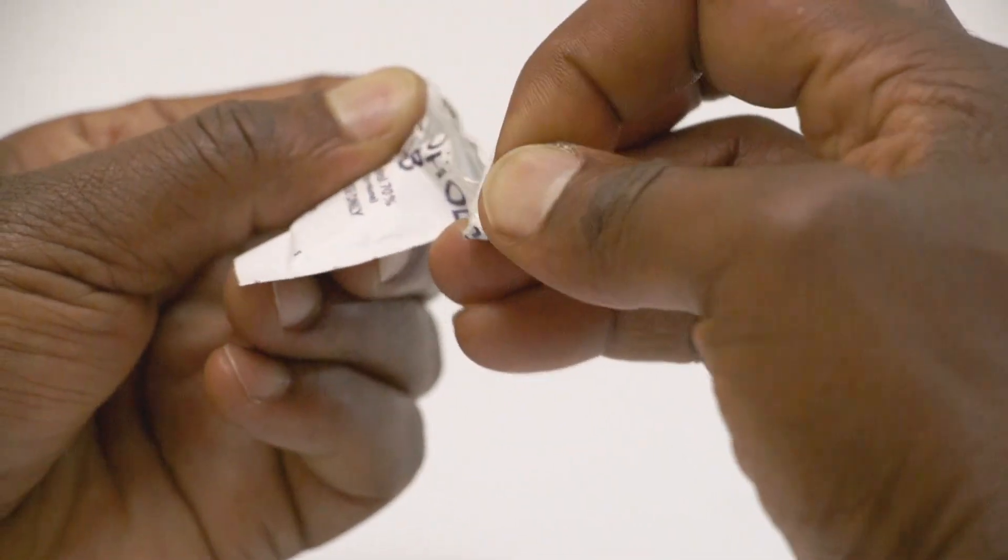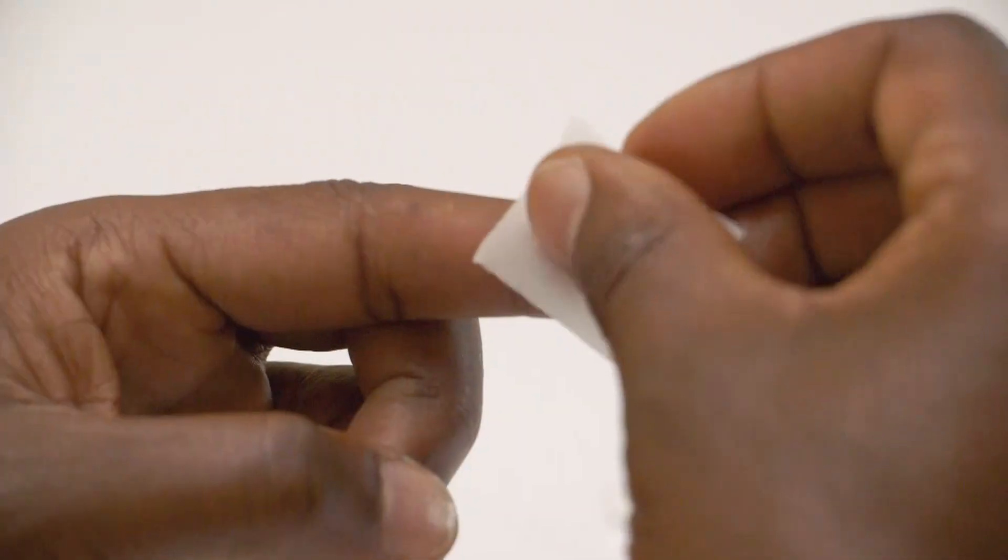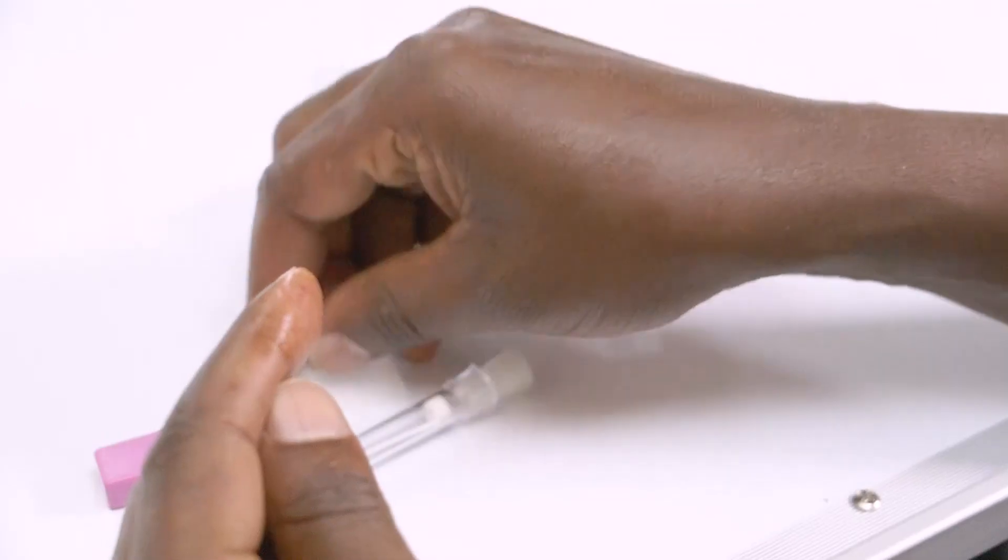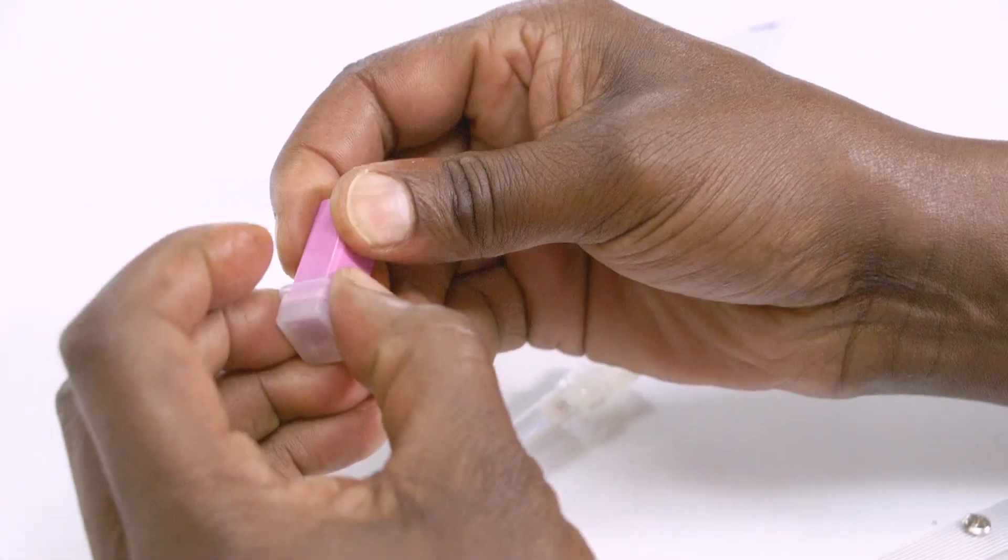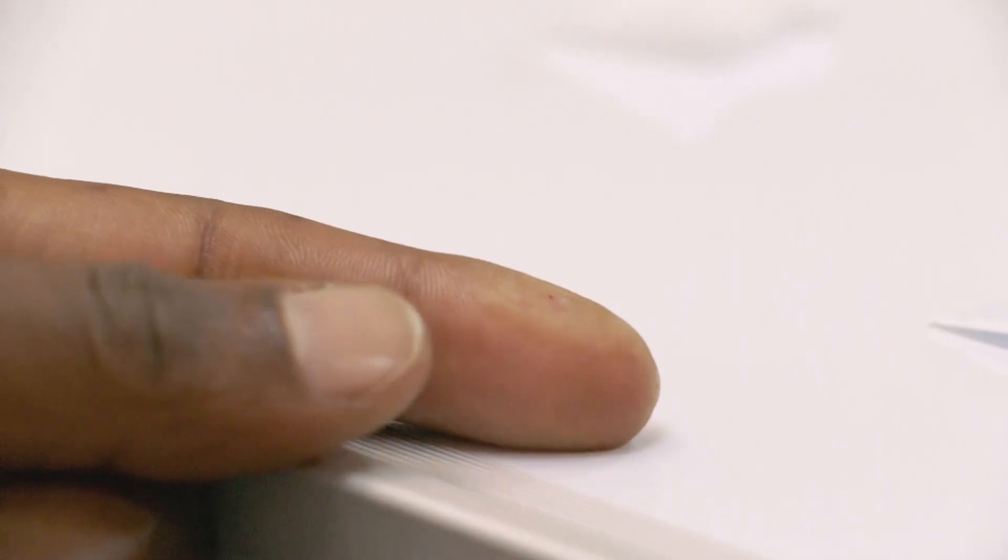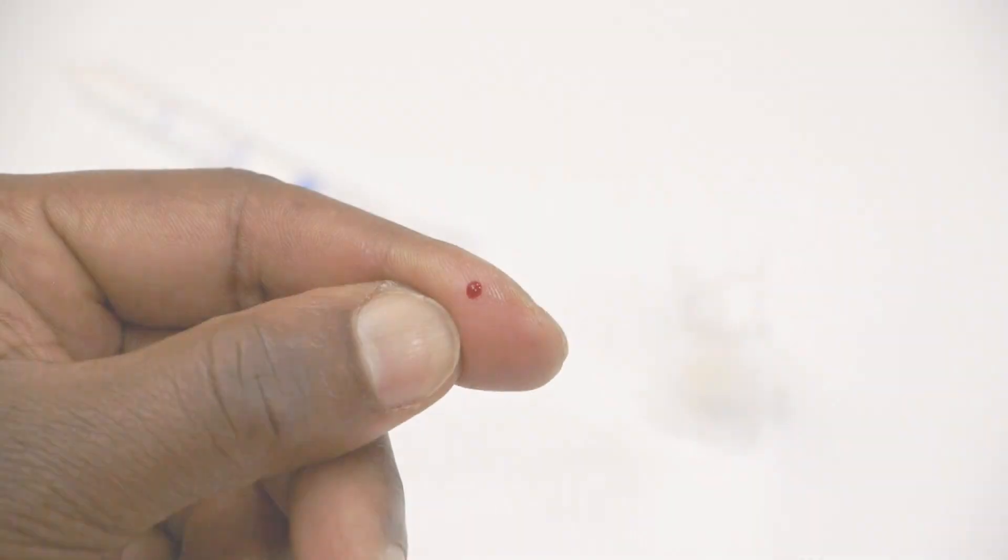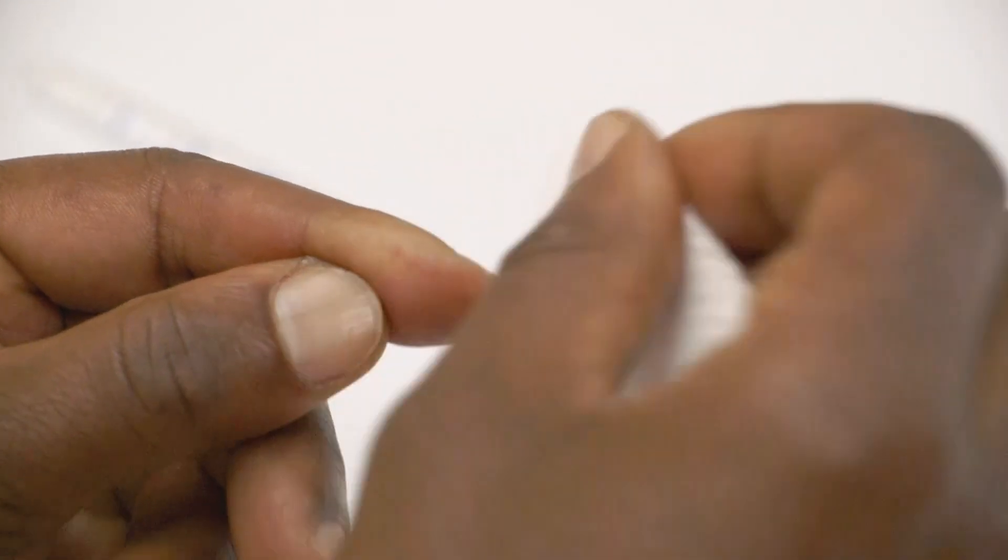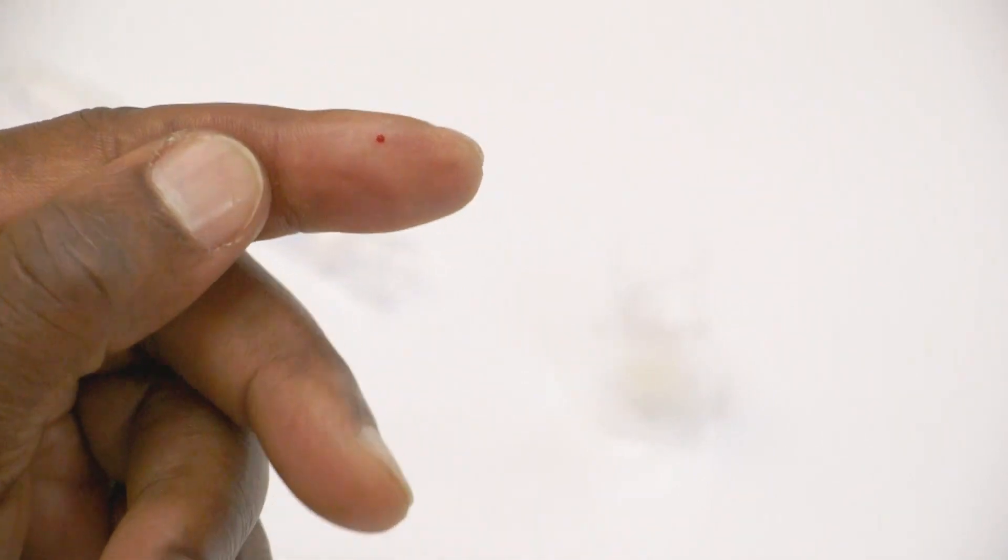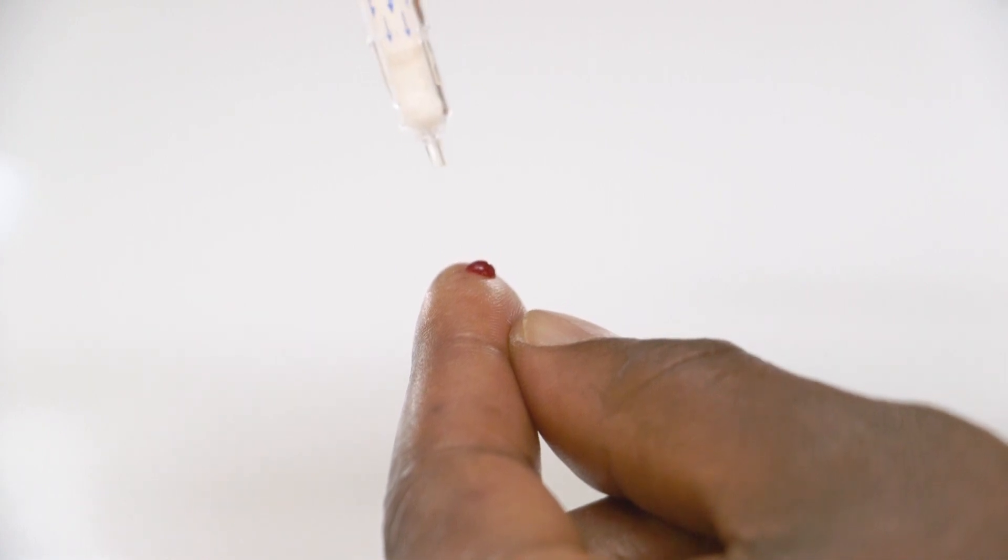Open alcohol swab and sterile gauze pad. Clean finger with alcohol swab. Uncap the safety lancet. Prick your skin and squeeze out the first drop of blood. Wipe away first drop of blood with sterile gauze pad. Squeeze out second blood drop. Fill tip of testing device with blood.